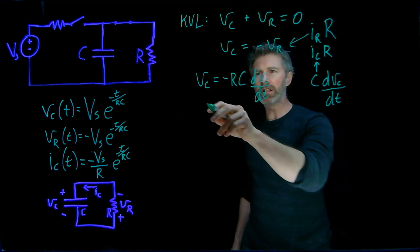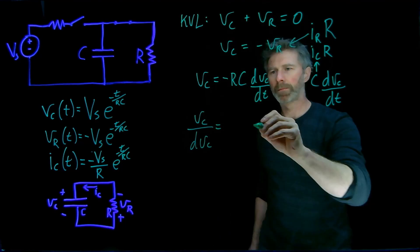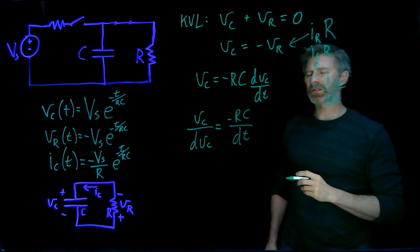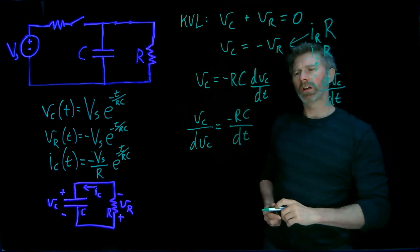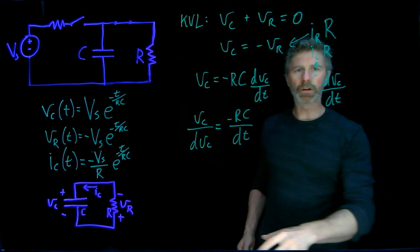So basically that means I'm going to move DVC over to this side and I get VC over DVC. So that's a good start, but it's actually going to help me more if I flip these two around, invert both sides of this expression.